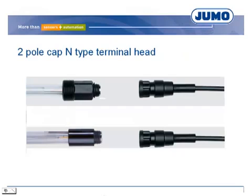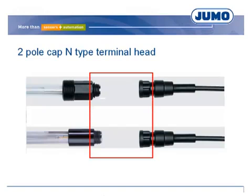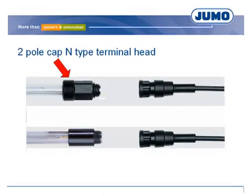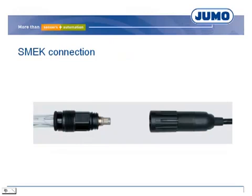When the combination electrode does not have a resistance thermometer, the connection is realized via a 2-pole cap N-type terminal head. Combination electrodes are fixed into fittings with a PG 13.5 male thread. For laboratory applications, the electrodes are also available without male thread. Generally, pH combination electrodes with an integrated resistance thermometer are available, using a 6-pole connection system called JUMO SMEG.